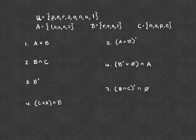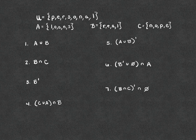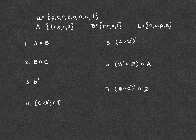Now we're going to do the same type of operations with a new example. The universal set is the letters in the word 'personal,' and I've created three subsets: set A is the letters in 'loans,' set B is the letters in 'real,' and set C is the letters in 'nope.' Each subset only uses letters from the word 'personal.'